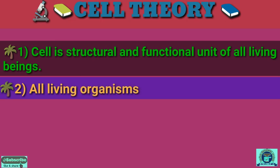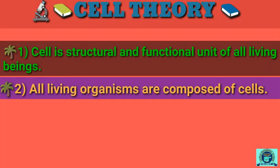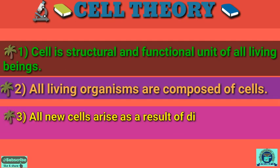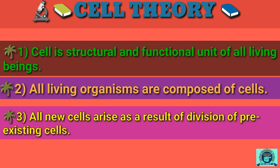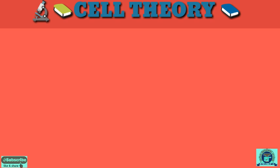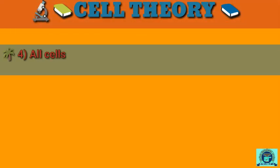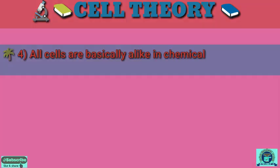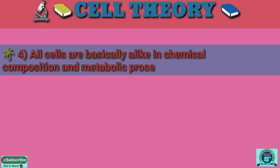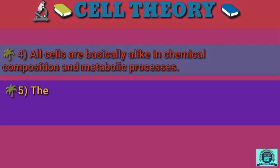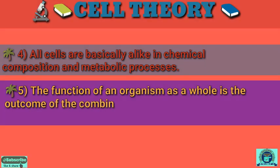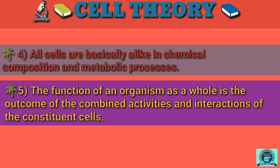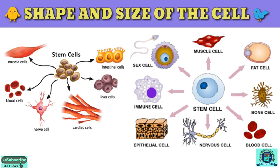Number three, all new cells arise as a result of division of pre-existing cells. Number four, all cells are basically alike in chemical composition and metabolic processes. Number five, the function of an organism as a whole is the outcome of the combined activities and interaction of its constituent cells.